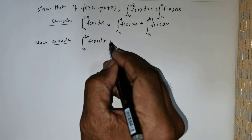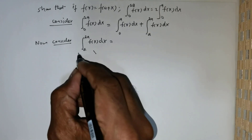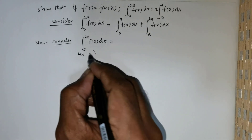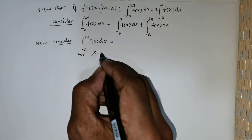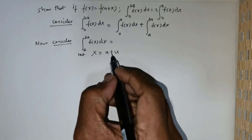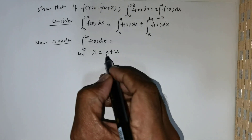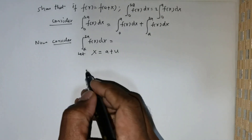I need to integrate this, so I am going to use the substitution: let x be equal to a plus u, where u is a variable, x is a variable, and a is a constant.